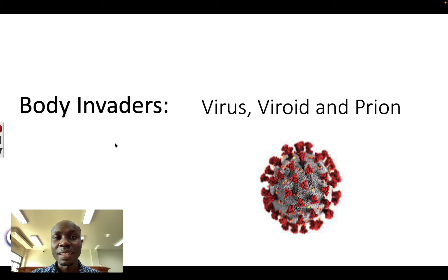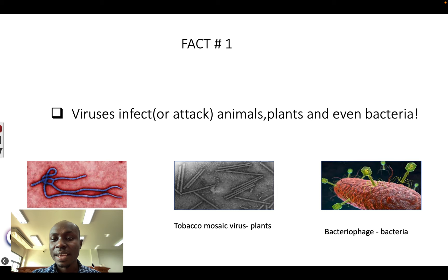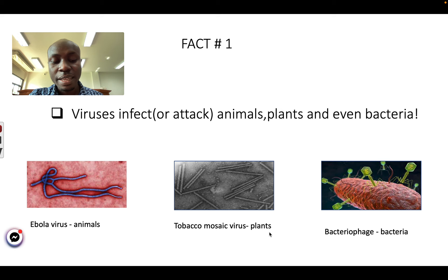Let's start with viruses and with some facts about viruses. The first fact is that viruses can infect or attack animals, plants, and bacteria. They can go inside their cells or their bodies and kill them. An example of an animal virus is Ebola, a plant virus is tobacco mosaic virus or TMV, and a bacterium virus is bacteriophage.